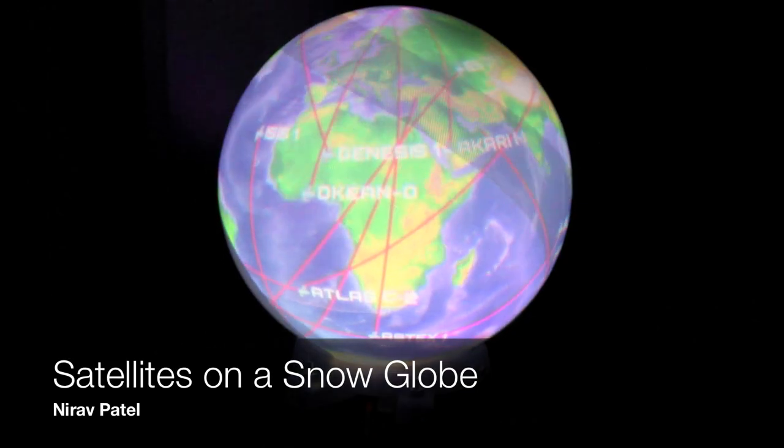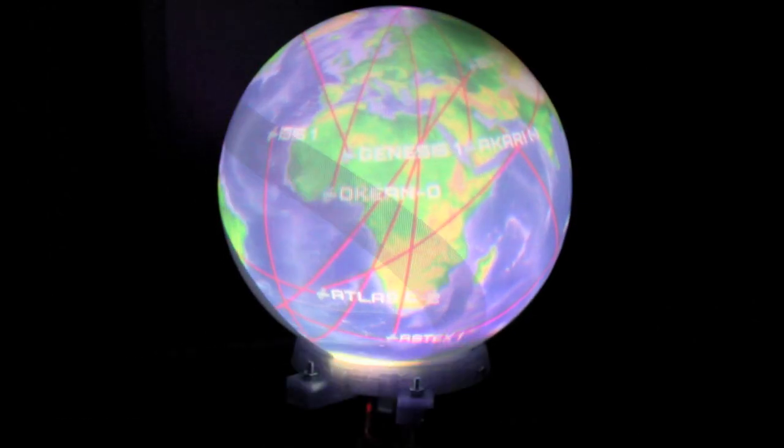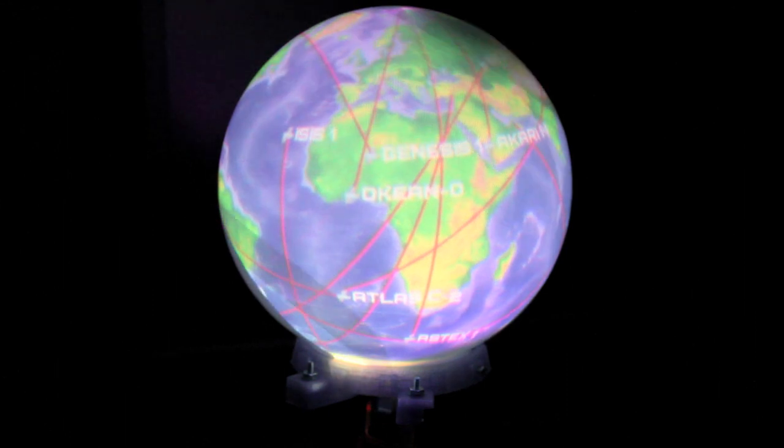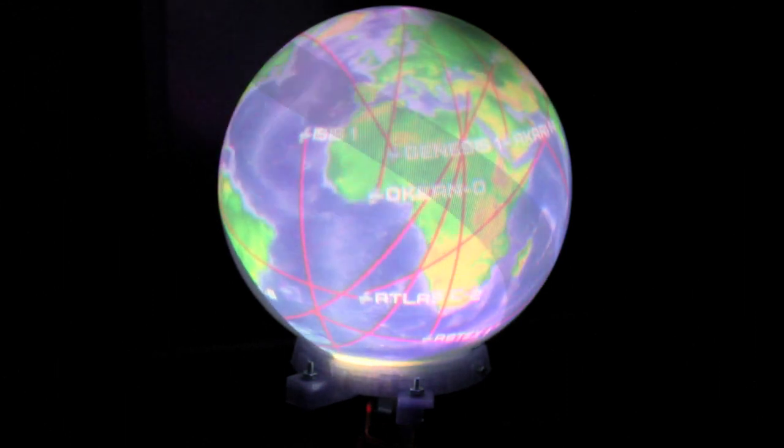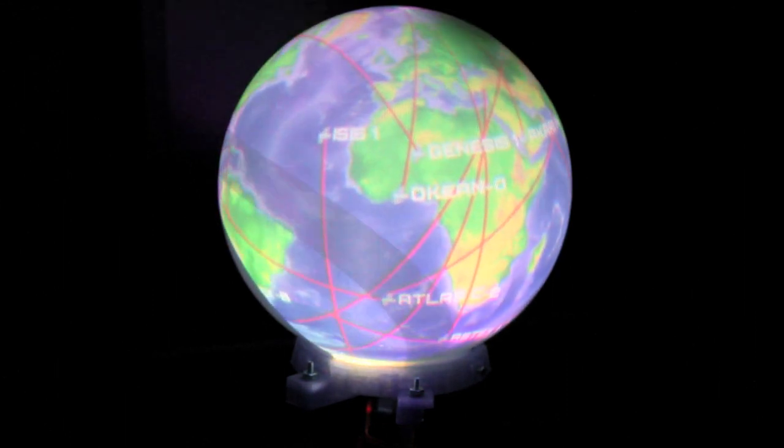This is Snowglobe, an 8-inch diameter open-source vehicle display that's currently showing live satellite tracking information. 24 satellites are being tracked.